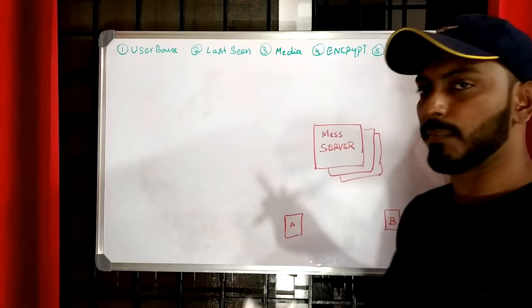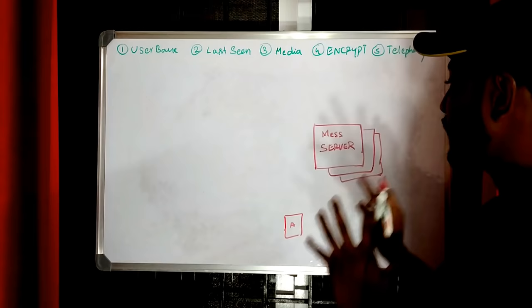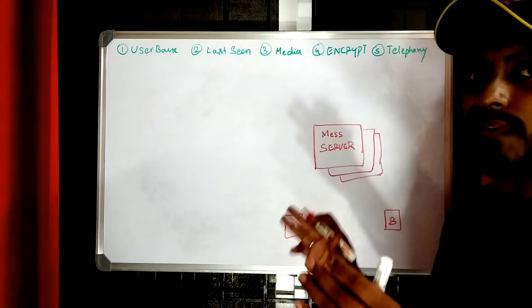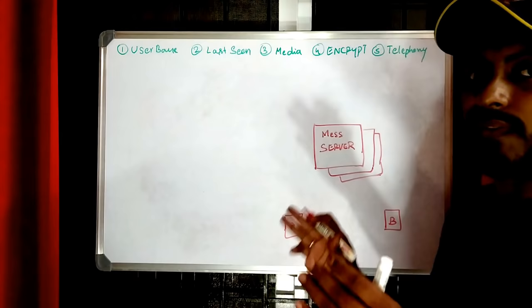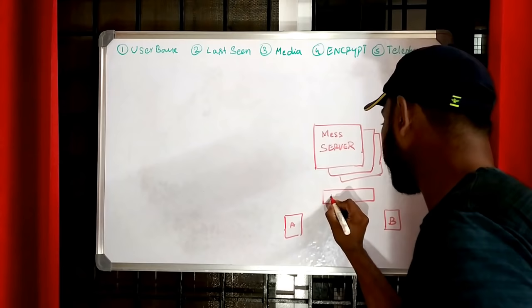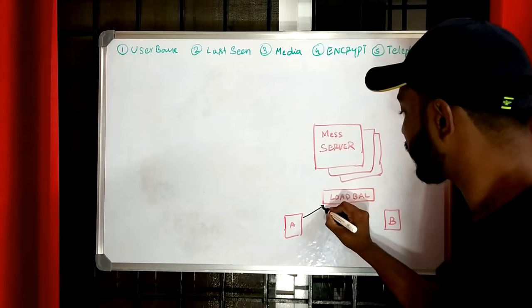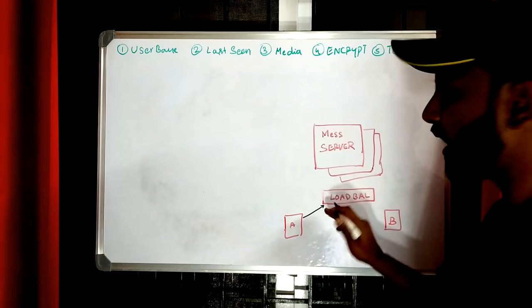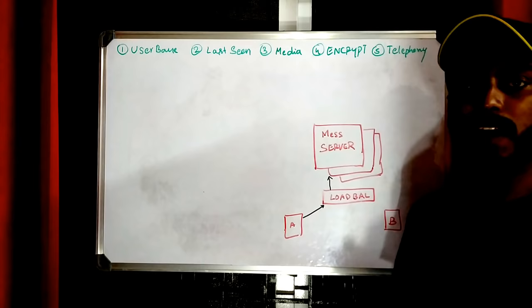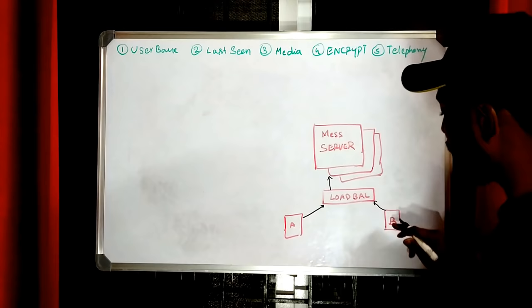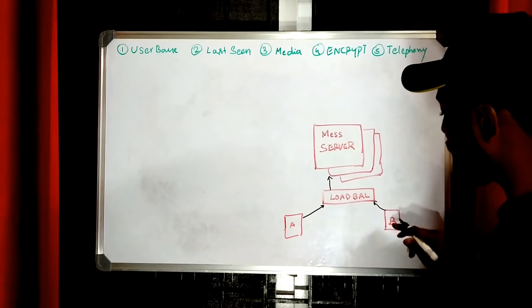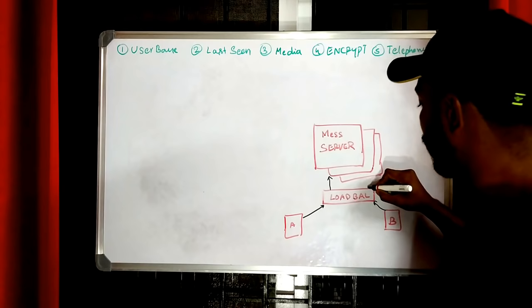When we have multiple messaging servers, the clients can't connect to them randomly — that's when a load balancer comes in between. When client A tries to connect to the messaging server, it first hits the load balancer, and the load balancer decides which server to connect to based on parameters like server load or the session the client was previously connected to. The same happens when client B tries to connect — the load balancer redirects the request to one of the servers.